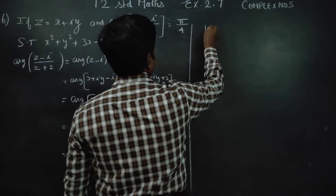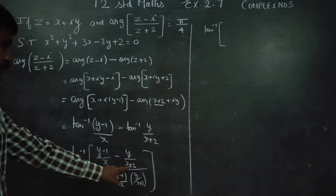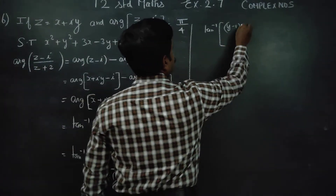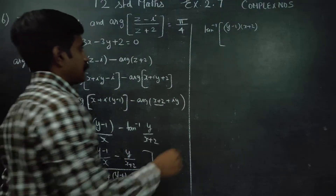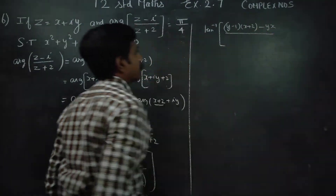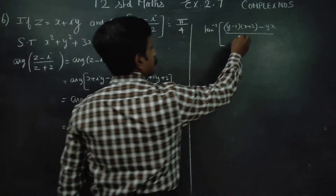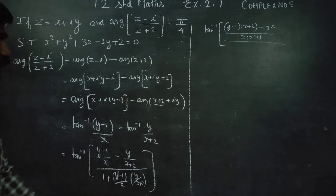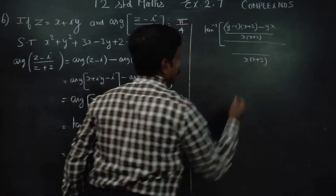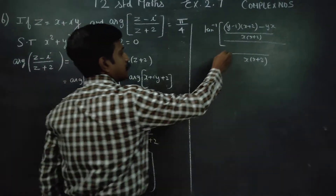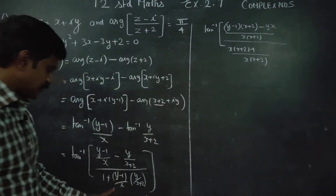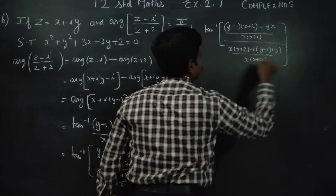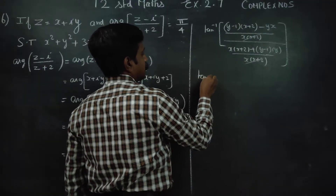Next stage: cross multiply using LCM. The numerator becomes (y minus 1)(x plus 2) minus yx, all over x(x plus 2). The denominator becomes x(x plus 2) plus (y minus 1) times y, all over x(x plus 2). The x(x plus 2) terms cancel.